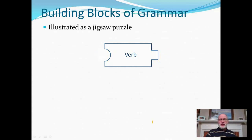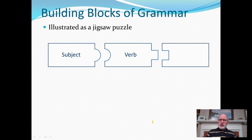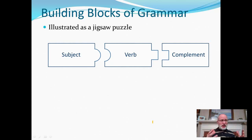A subject goes on the left of the verb with a protrusion that fits into the socket on the verb. The verb is the central idea of the clause and every verb has to have a subject. A verb expresses an action or a state of being. You cannot have an action independent of an actor. You cannot have a state of being independent of something to exist in that state. So every verb has to have a subject, at least logically. It's not always expressed in the sentence, but it has to exist at least logically, and very often it is expressed in the sentence.